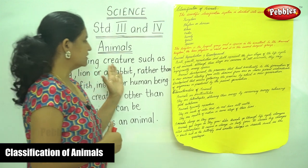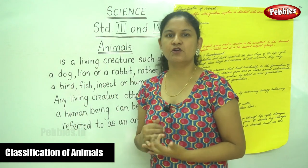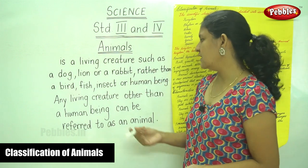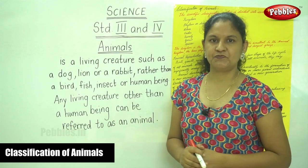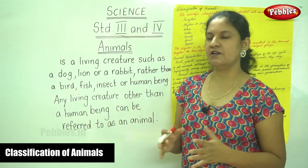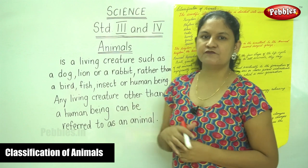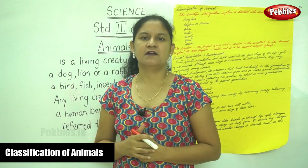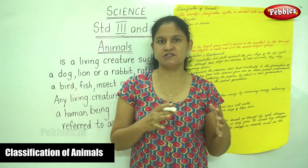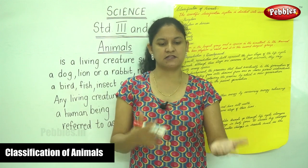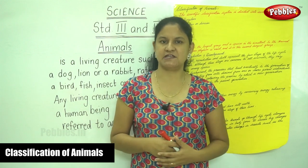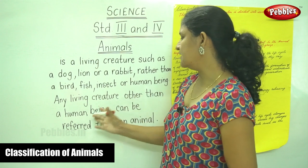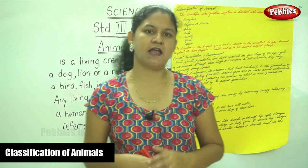A living creature like your dog, lion, or rabbit can be referred to as an animal, rather than a bird, a fish, an insect, or a human being. Any living creature other than a human being can be referred to as an animal.